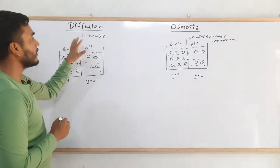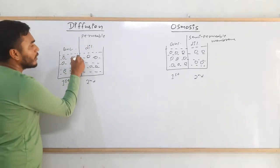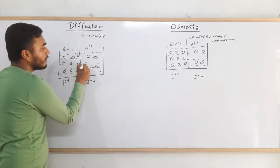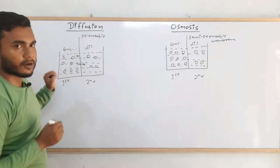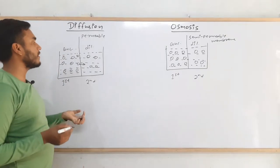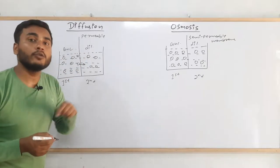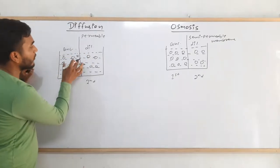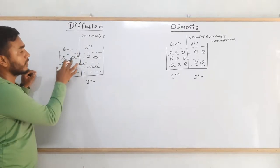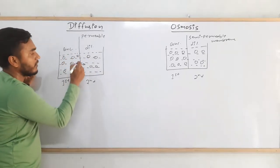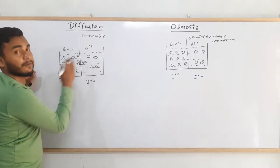In case of diffusion, where there is a permeable membrane, the solute will flow from the region of higher concentration to the region of lower concentration. Simply put, the solute will flow from the concentrated solution to the dilute solution, because the amount of solute is more on the concentrated side. So the solute will flow from left to right.